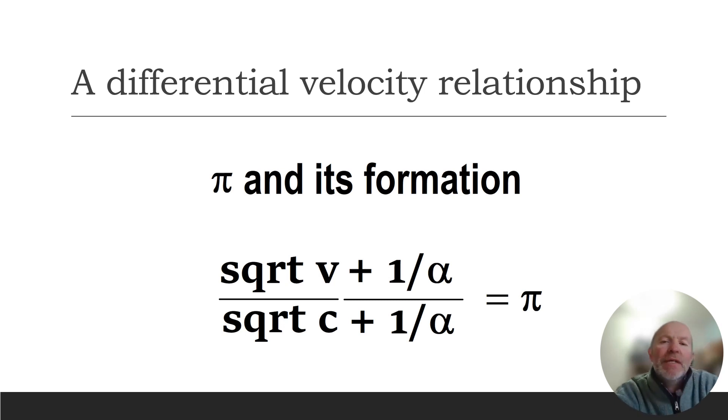So the square root of V plus 1 over α. And this 1 over α fine structure constant, we caught a glimpse of it before in terms of that black line between the red line and blue line and that electron surface area.